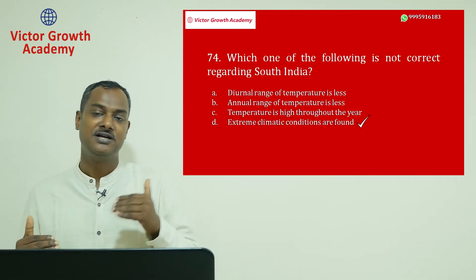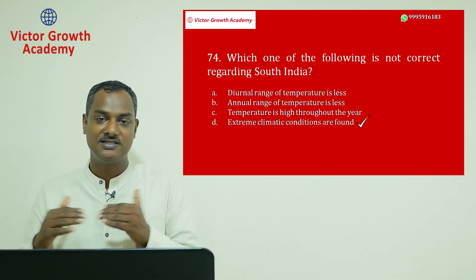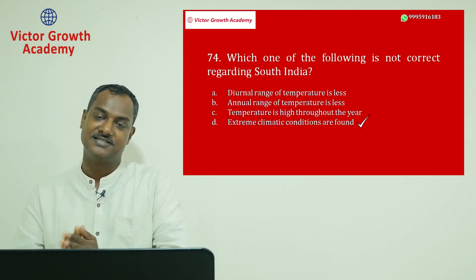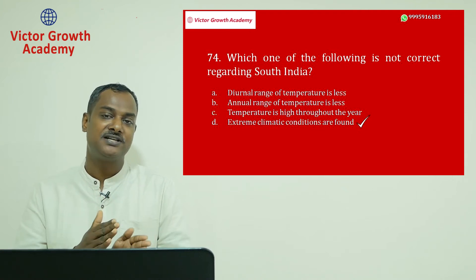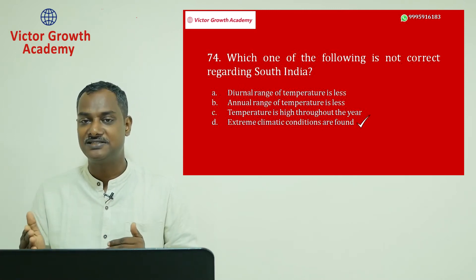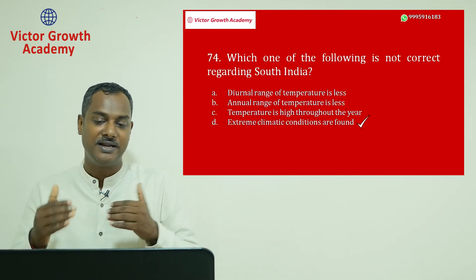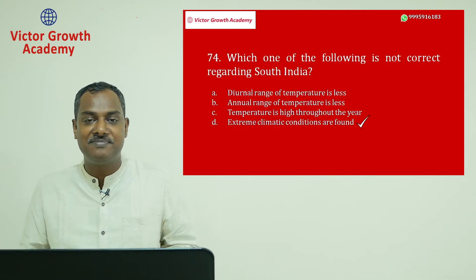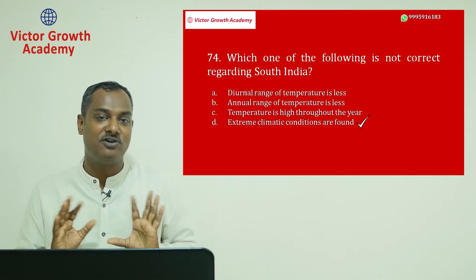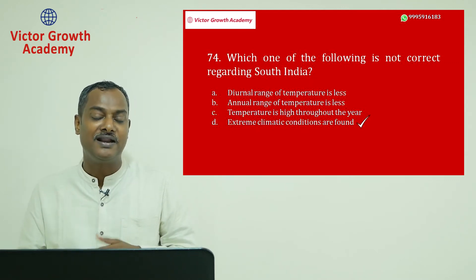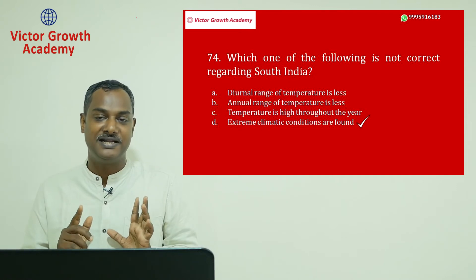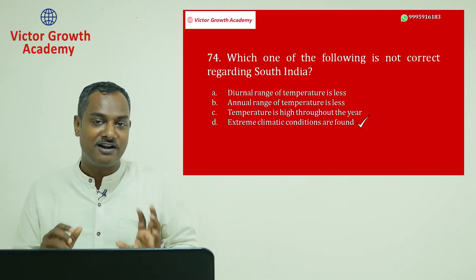They are asking which statement about South India is NOT correct. Diurnal range of temperature — the difference between day and night temperature — is less in South India. That is true. If the diurnal range is less, the annual range is obviously also less. So if A is correct, B should also be correct. You cannot have both as the single answer, so A and B must be removed. The fight is between C and D.